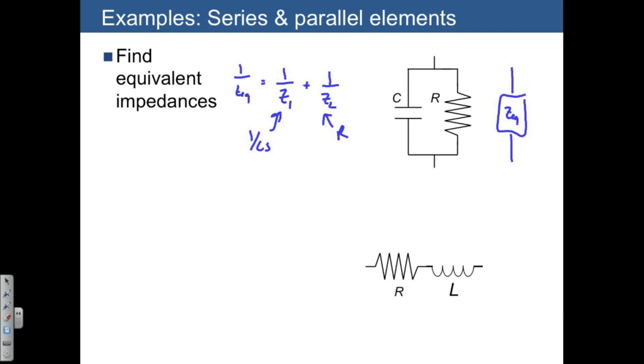So, what we end up with is 1 over ZEQ is equal to 1 over 1 over CS plus 1 over R. In other words, CS plus 1 over R. So that gives us the equivalent impedance for this system.